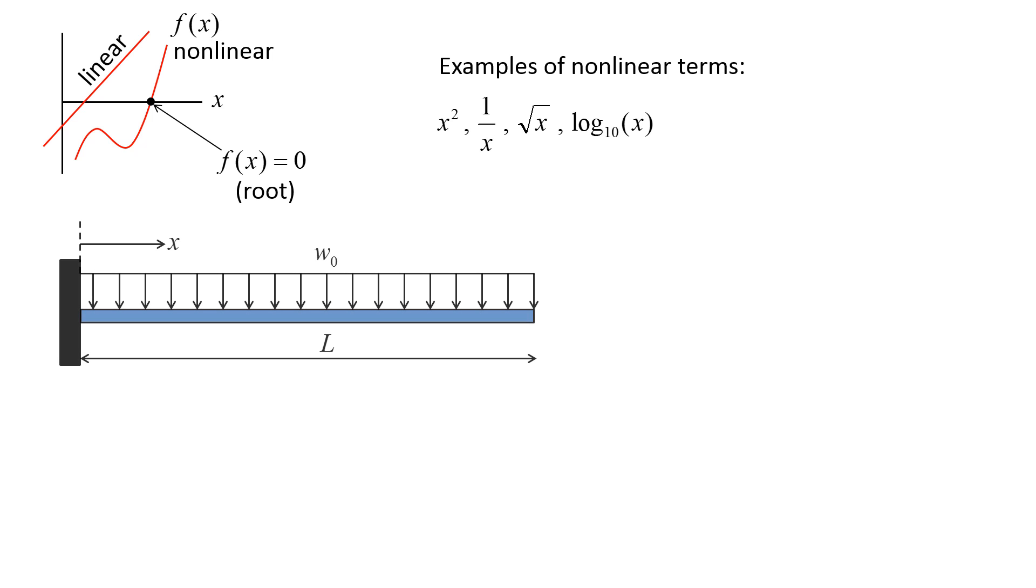For example, here we have a cantilevered beam of length l that is subjected to a uniform load w0. The distance from the point of attachment at the wall to some location on the beam is denoted by the variable x. The beam will undergo bending due to the load.